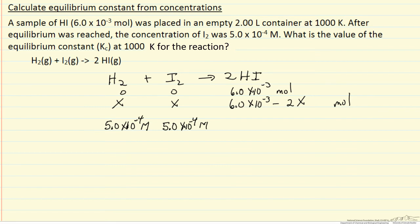The question is, what's the concentration of hydrogen iodide? Let me calculate the initial concentration of HI. We have 6.0 × 10⁻³ moles in a 2 liter container, so concentration is 3.0 × 10⁻³ molar. That's our initial concentration.